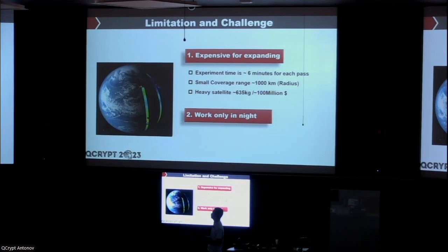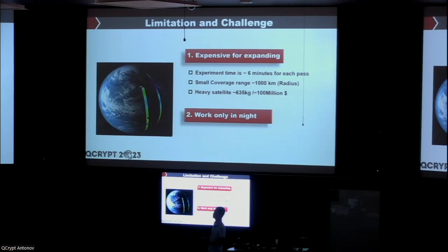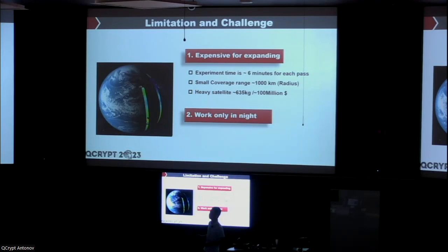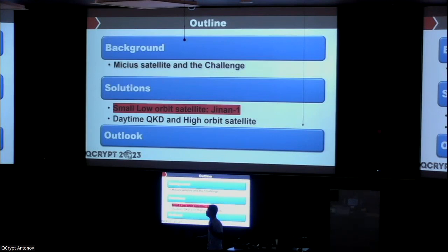There are also some limitations and challenges. The most important is that the satellite is very heavy and very expensive. A single satellite can serve only several users; if you need hundreds or thousands of users or global coverage, one satellite is not enough. We could launch several satellites to construct a constellation, but then we have to make them much cheaper. Another limitation is we can only work at nighttime — we can't work in daytime yet. So we need to move forward with smaller and cheaper alternatives.